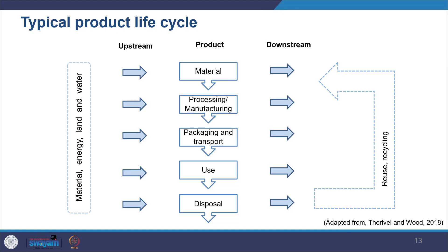In the diagram you can see upstream and downstream in the product life cycle. Looking at the product life cycle, you see the material which comes in, how it is processed, manufactured, packaged, transported, put to use, and eventually disposed. Everything up to disposal is considered upstream, and after disposal — how material is reused or recycled into new material — is considered downstream.